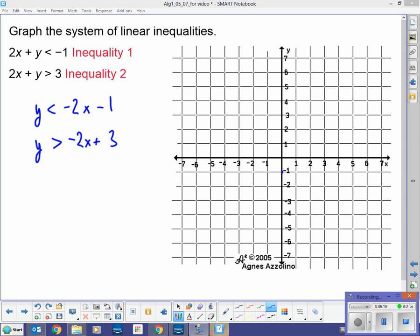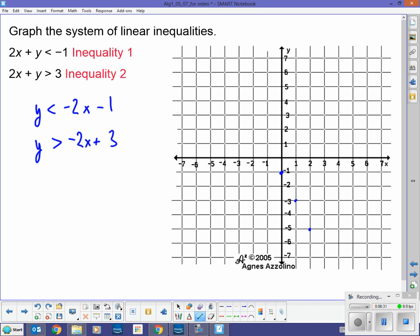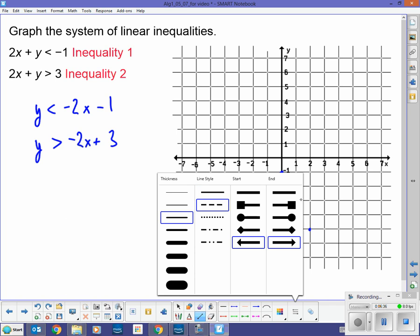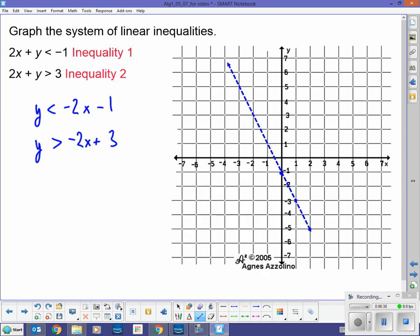So, my Y is here at negative 1. My slope is negative 2. So, down 2 over 1. Down 2 over 1, etc. And, that boundary is going to be a dashed line. So, something like... That looks pretty good. Okay, so that's the first one.